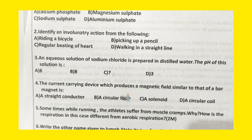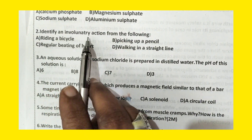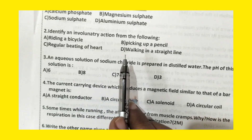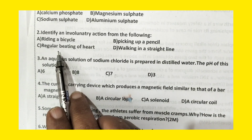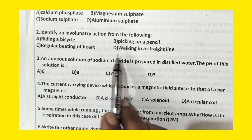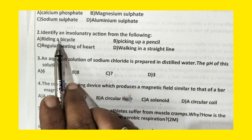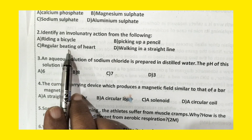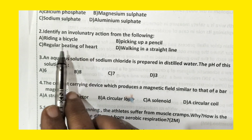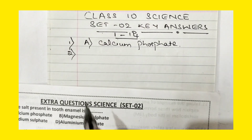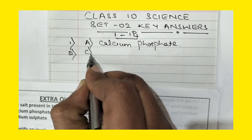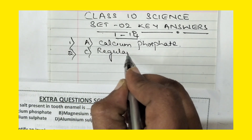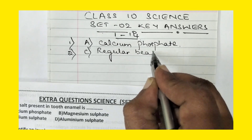The second question: identify an involuntary action from the following — riding a bicycle, picking up a pencil, regular beating of heart, walking in a straight line. Options A, B and D are voluntary, but regular beating of heart is involuntary because it is not under our control. Therefore, the answer for second is option C, regular beating of heart.